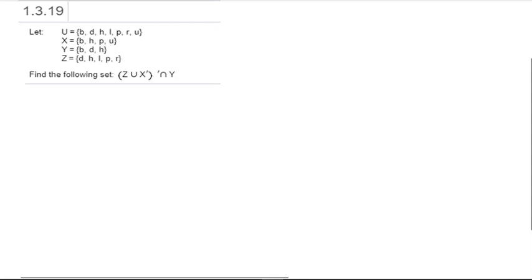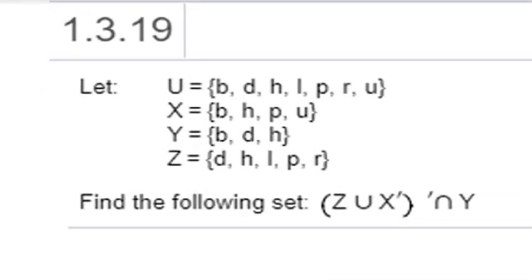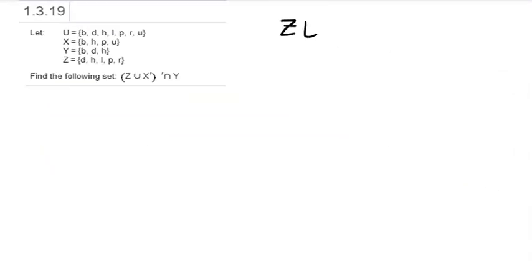In this video, we're going to find the elements in a set based on set operations. We're given the universal set U = {b, d, h, l, p, r, u}, the set X = {b, h, p, u}, the set Y = {b, d, h}, and the set Z = {d, h, l, p, r}.